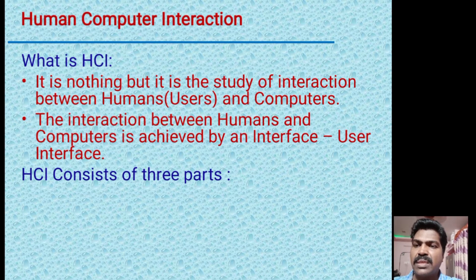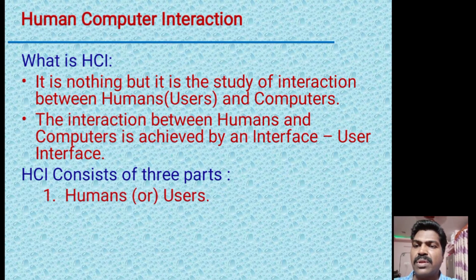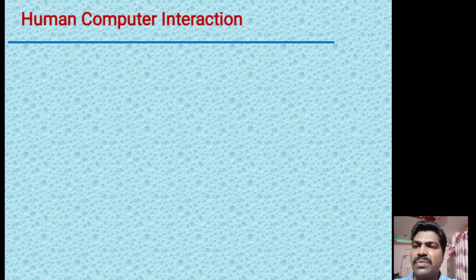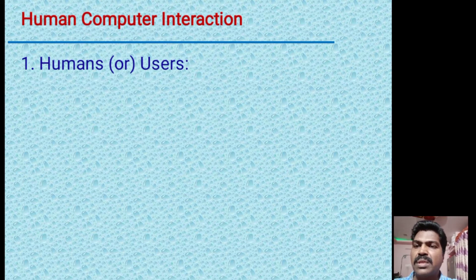HCI consists of three parts: H stands for humans, or users; C stands for computer; and I stands for interaction. Now we will see one by one what is human, what is interaction, and what is computer.